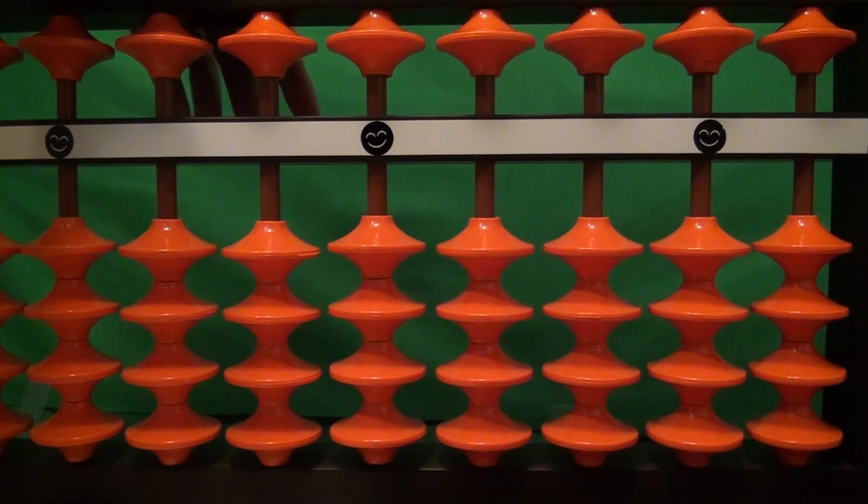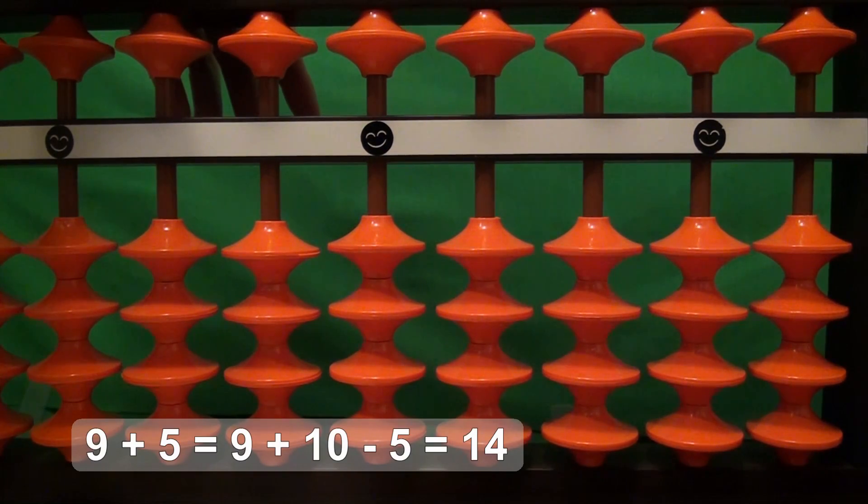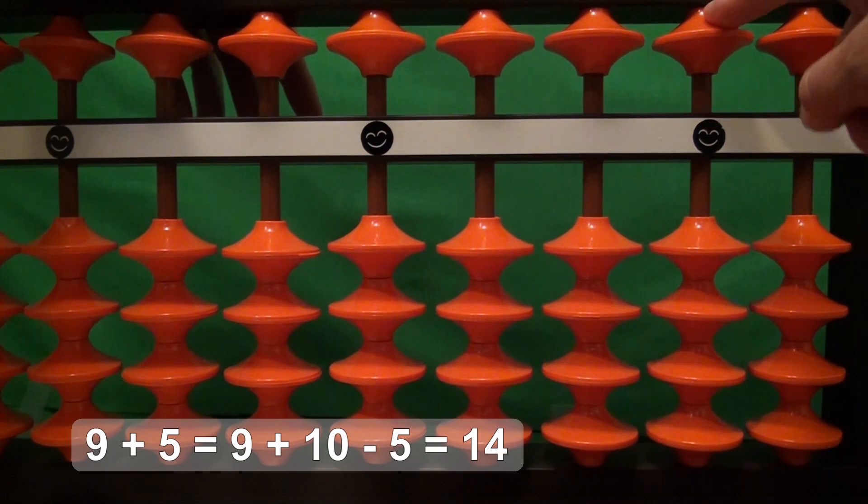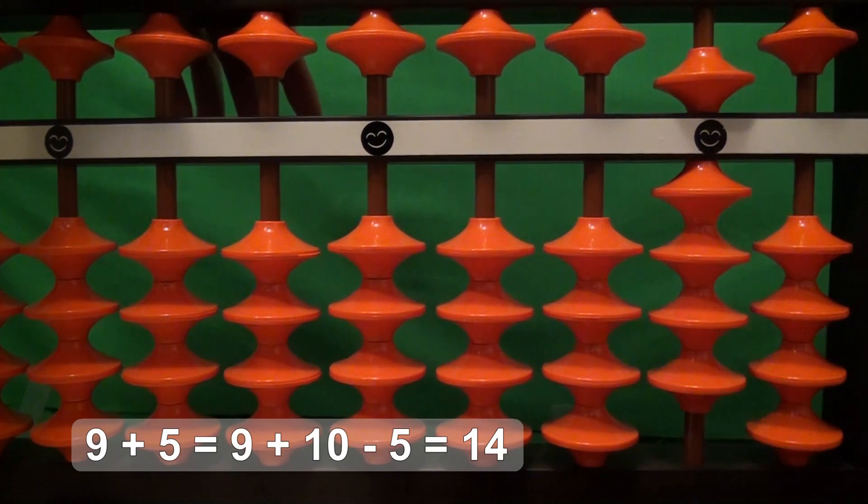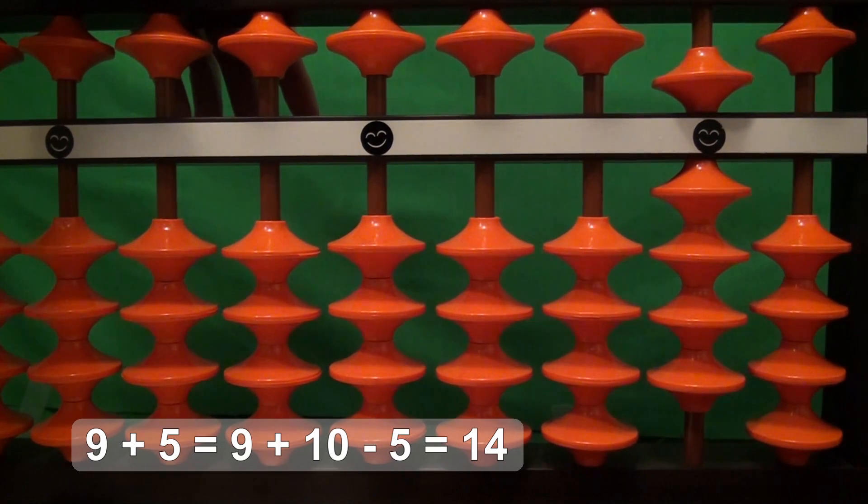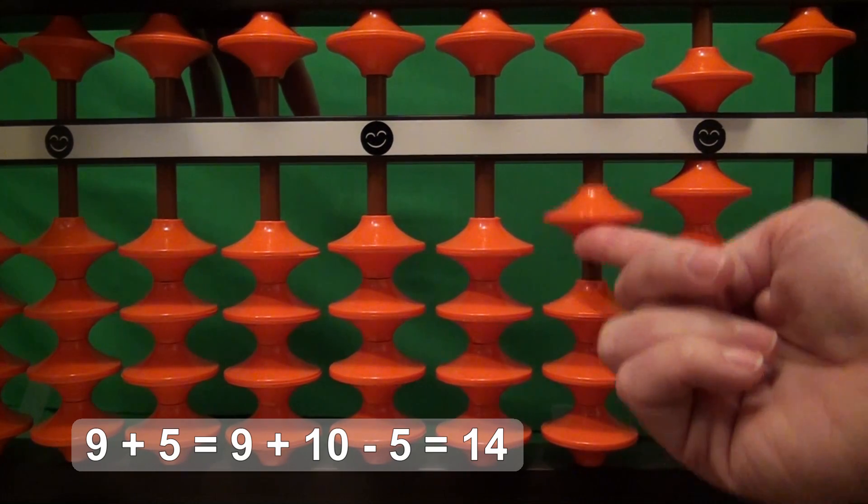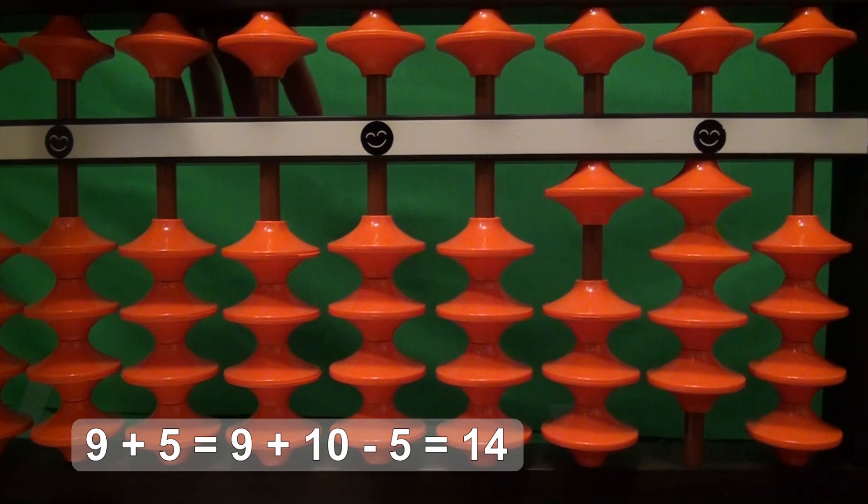And our last problem, 9 plus 5. 5 and 4 is 9. We want to add 5. We don't have a 5 bead that we can use so we have to add 10 and take away 5. And there we have our answer, 14. 9 plus 5 equals 14.